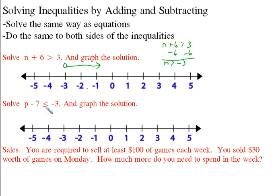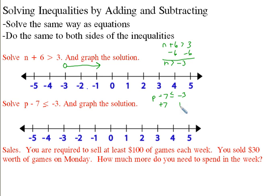Now I'm going to slightly change this problem to a less than or equal to. So p minus 7 is less than or equal to negative 3. I solve it the same way — I add 7 to both sides, and I end up with p is less than or equal to negative 3 plus 7, which is 4.